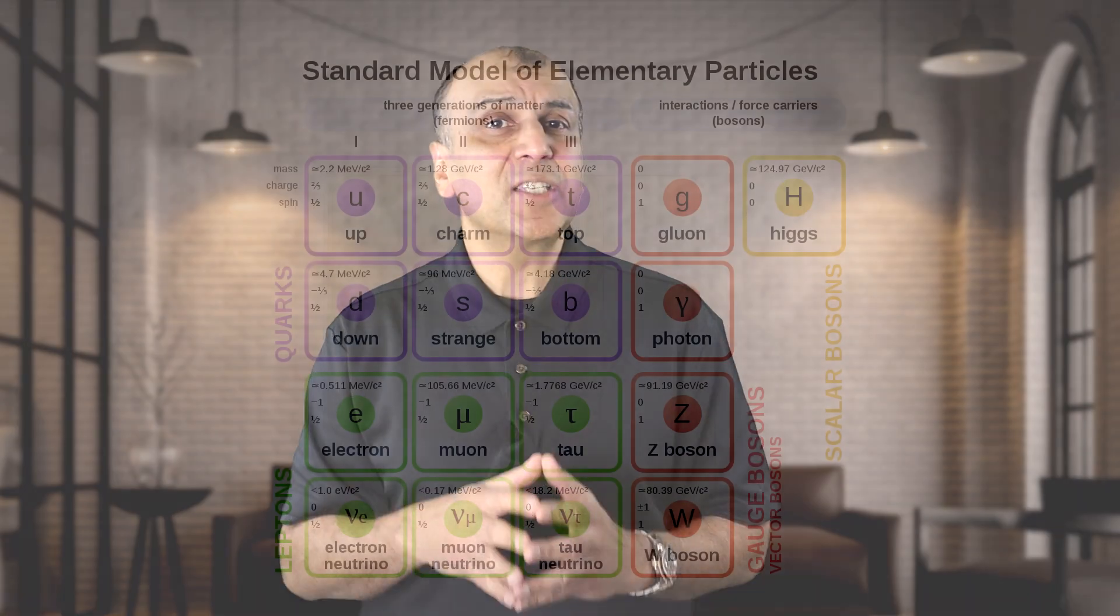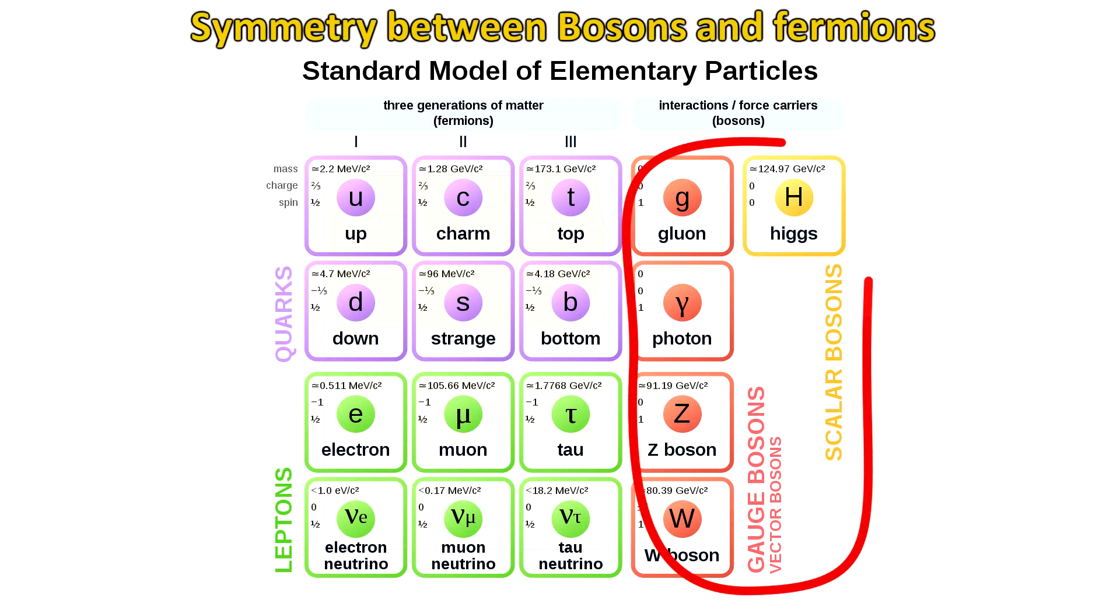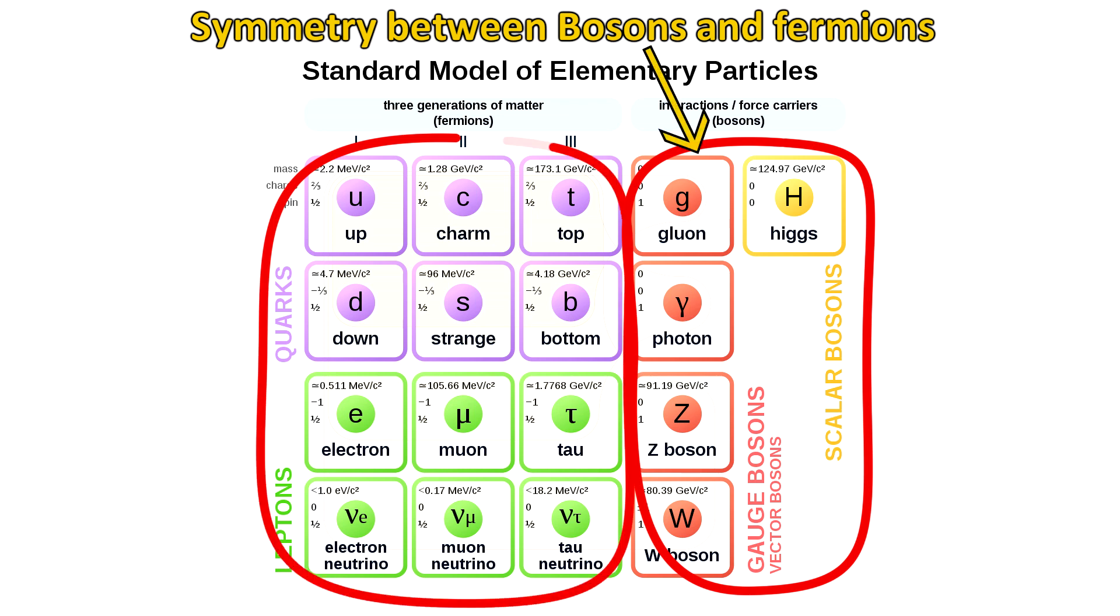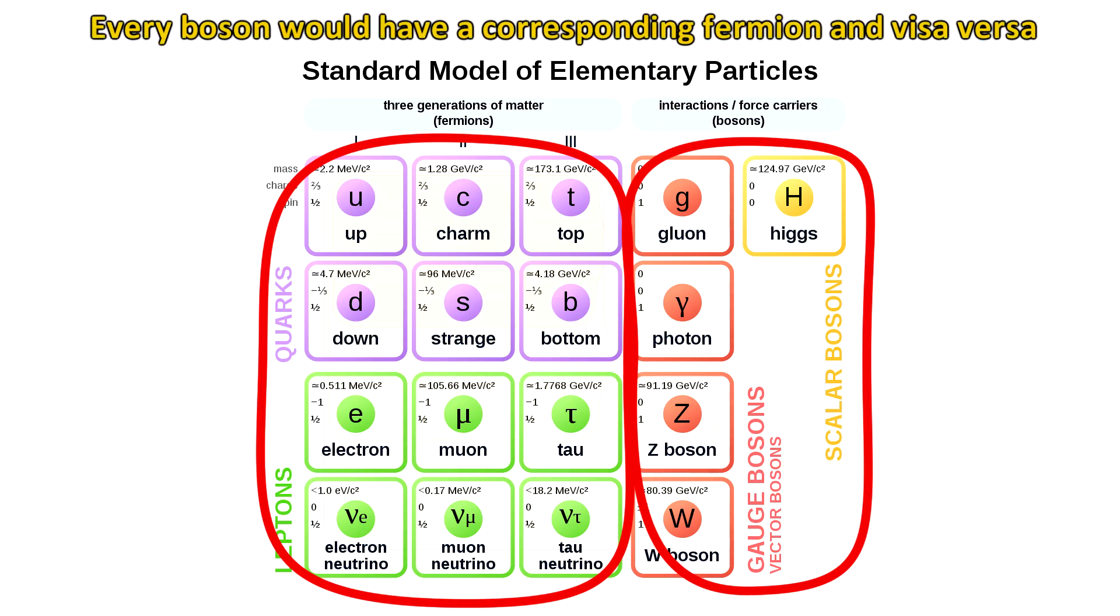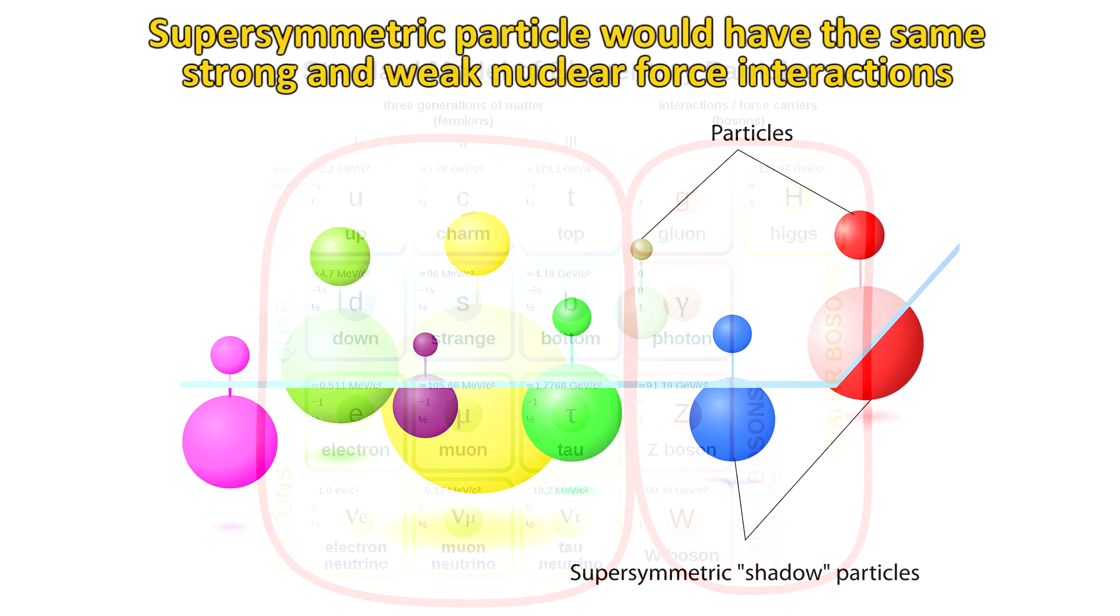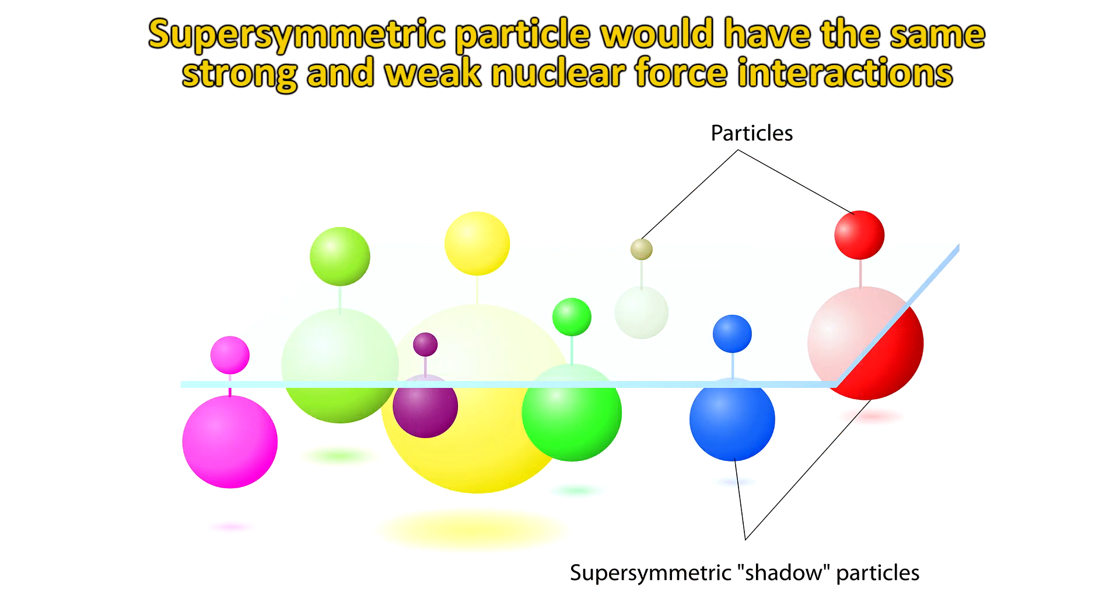Scientists like the WIMP because it was not invented for the purpose of solving the dark matter problem, but comes about naturally in string theory. And string theory requires supersymmetry to work. So what is supersymmetry? Supersymmetry is a special kind of symmetry between force particles, the bosons, and matter particles, the fermions. Supersymmetry says that for every boson particle, there would be a corresponding fermion particle, and vice versa. And it would have the same charge, strong and weak nuclear force interactions. It would have a different spin, and because of symmetry breaking, it could have a much higher mass.